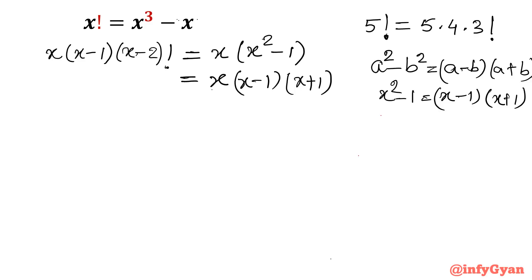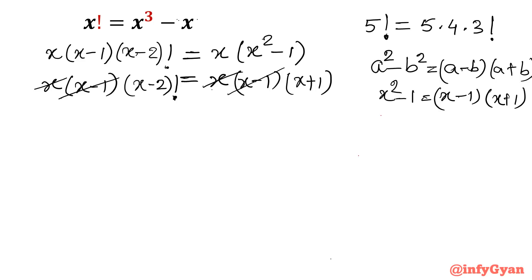So now the left hand side is x into x minus 1 into x minus 2 factorial. Now x will get cancelled, and x minus 1 will also get cancelled. That is why I wrote x factorial as x into x minus 1 into x minus 2 factorial — because x and x minus 1 cancel out. So what is left is: x minus 2 factorial is equal to x plus 1.